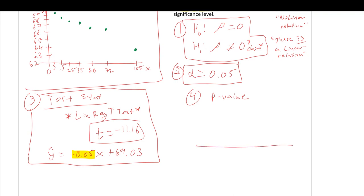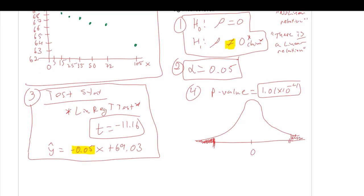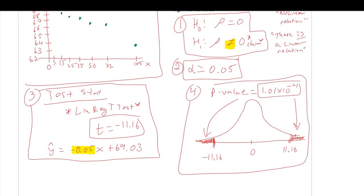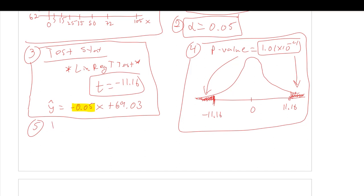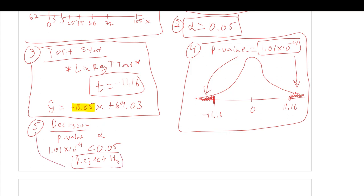Step four: draw the T-distribution graph with a bell shape. This is a two-tail test since the alternative is not equal to. The test statistic is negative 11.16, and by symmetry also positive 11.16. The area in those two tails is the p-value. Step five: compare the p-value of 1.01 times 10 to the negative 4 to alpha of 0.05. Since the p-value is much less than alpha, we reject the null hypothesis.